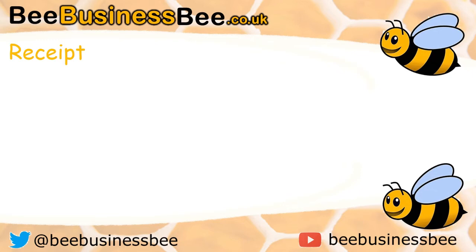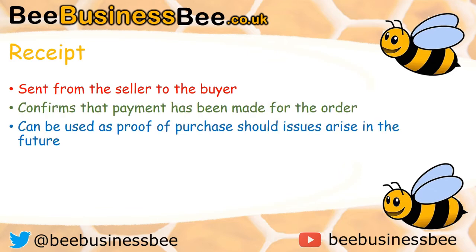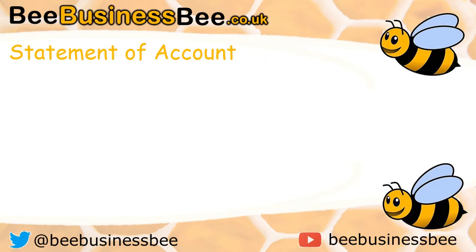Once payment has been made, the buyer should receive a receipt. A receipt is sent from the seller to the buyer and confirms that payment has been made for the order. It also gives the buyer proof of purchase — just as in a shop, you can present the receipt to demonstrate you purchased the items on a given date and use it to request a refund or resolution. It's also useful for looking back at what items were purchased, the price paid, and the date of purchase.